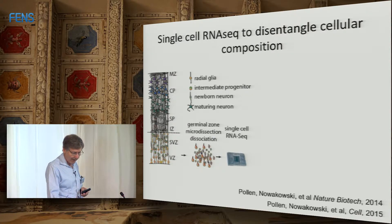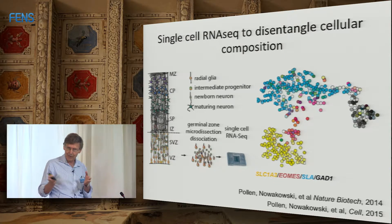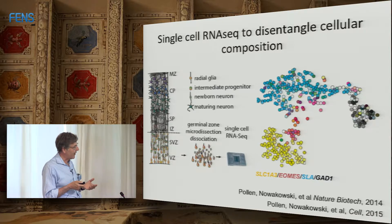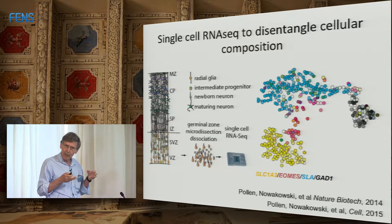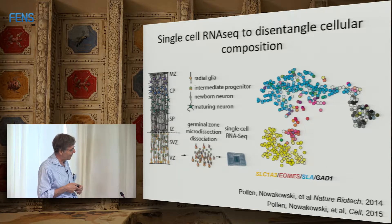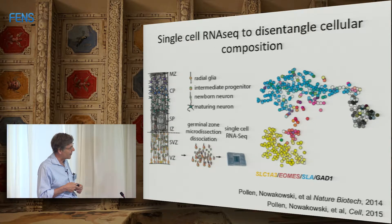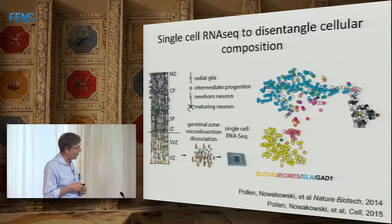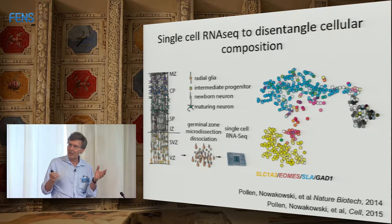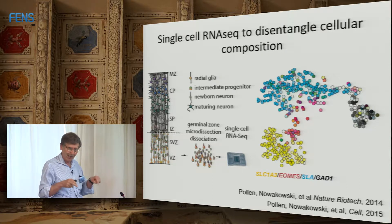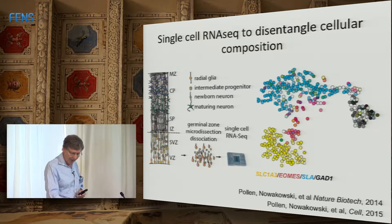Taking those single cell sequencing data, we bioinformatically evaluated them by principal component analysis and Louvain clustering to identify clusters of cells sharing primary gene expression patterns. We color-coded them by expression of canonical cell type genes: yellow for neuroepithelial or radial glial cells, pink for intermediate progenitors, blue for excitatory neurons, black for interneurons. This is all from primary samples of the progenitor zones. Our first study analyzed around 350 cells — pathetically small by today's standards where people do a million cells — but we learned quite a bit.